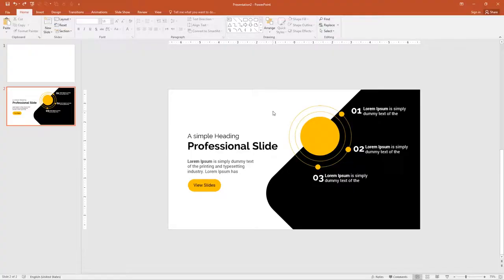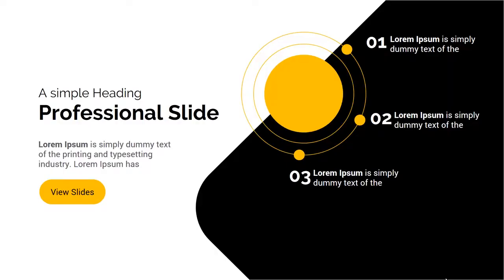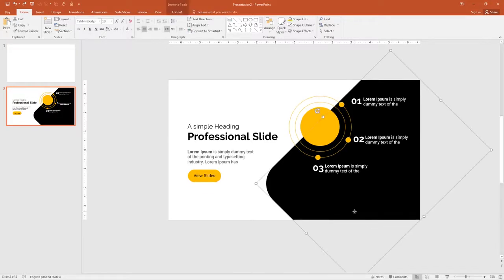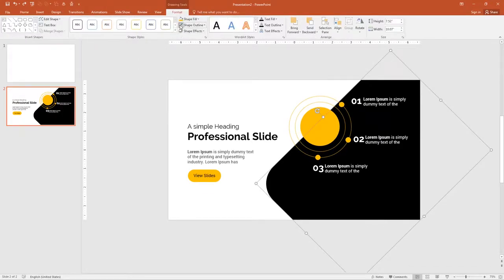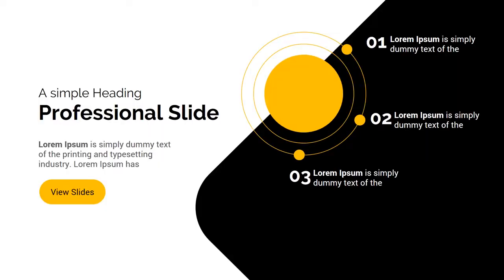Now the slide design is completed. Let me show you how it looks. There is a border on the rounded rectangle, so let me remove it. Click on the rectangle, go to Format and remove the shape outline. Here is the final slide.